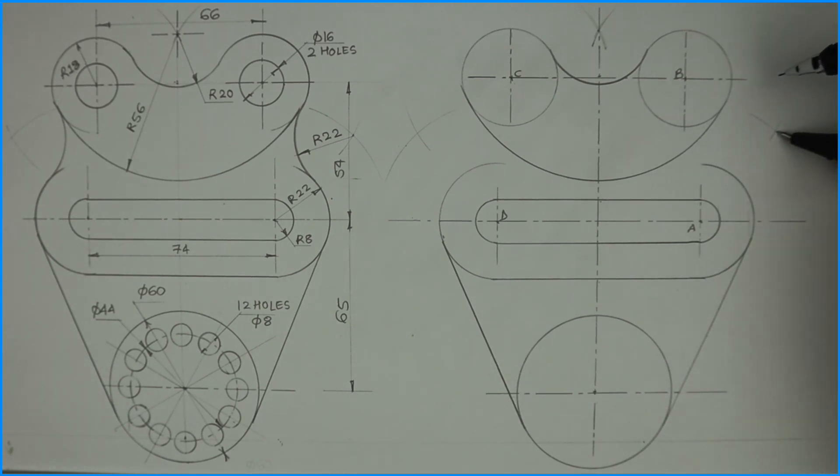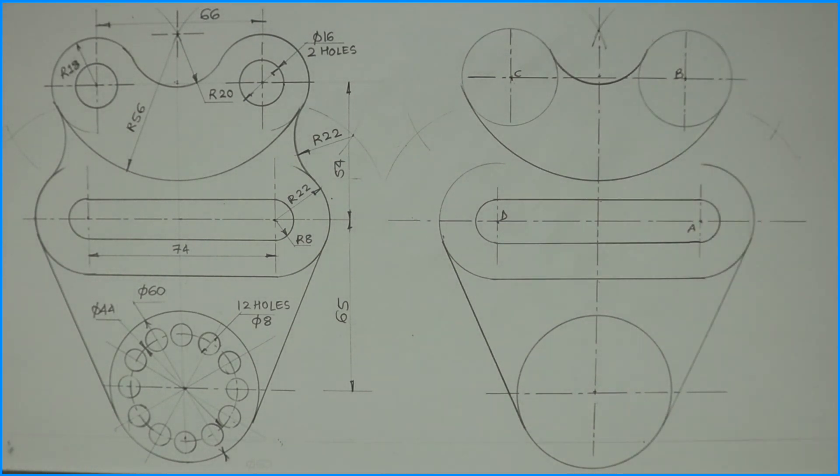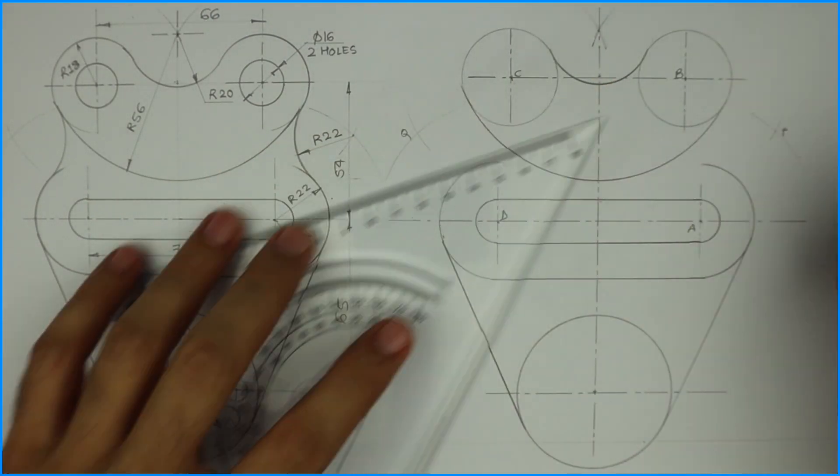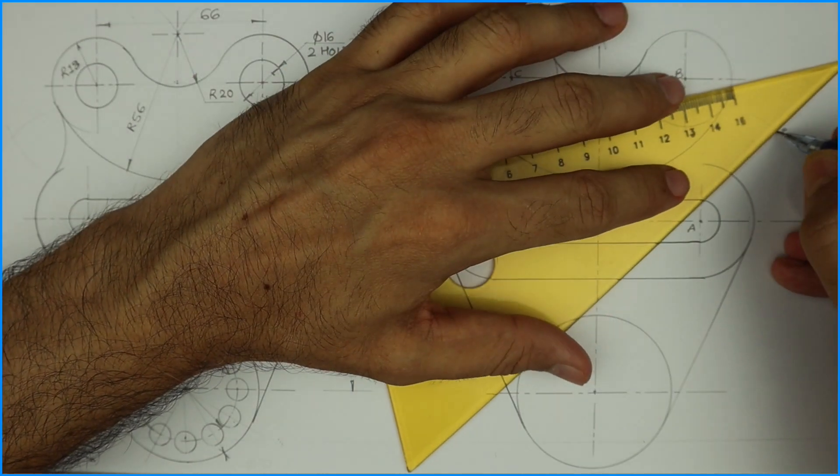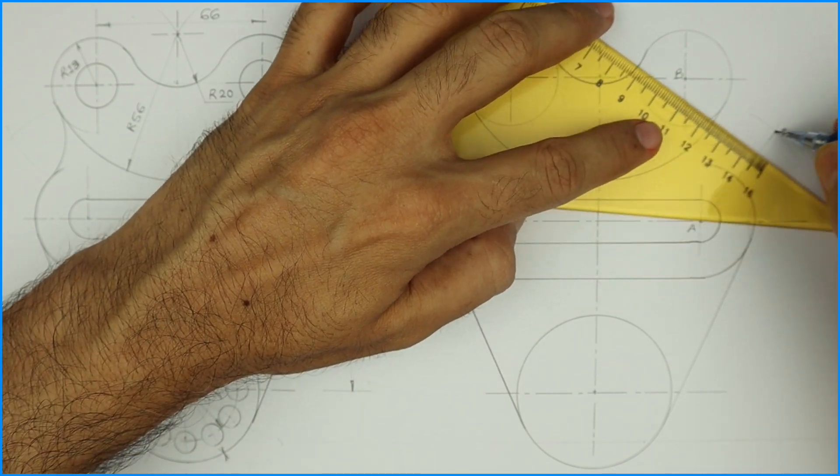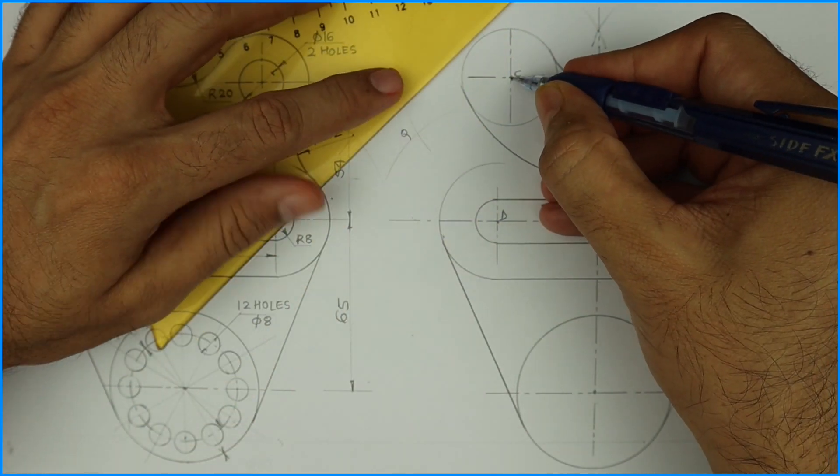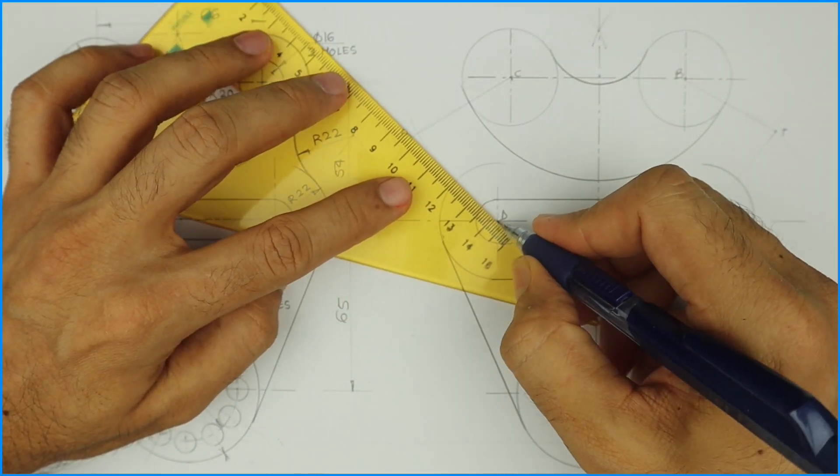If you want to know the exact point, you can join the centers. Let's say this is P and Q. If you join P to A and P to B, same way Q to C and Q to D.